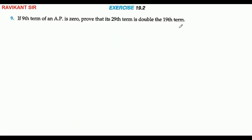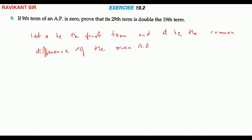To prove: the 29th term is double the 19th term. Let A be the first term and D be the common difference of the given A.P. To prove, a₂₉ is double the a₁₉.